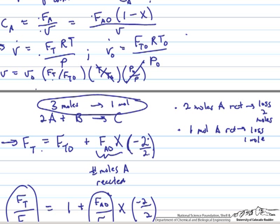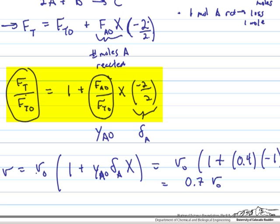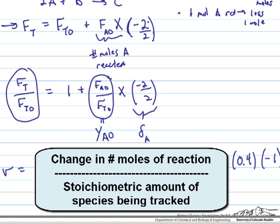So if we now take the step of dividing this expression through by Ft0 because we see that it is going to be useful to have this ratio here, then we can get this expression, that Ft over Ft0 is equal to 1 plus FA0 over Ft0, which is just the mole fraction of A in the feed, yA0, times the conversion x, times this variable that Fogler calls delta A, which is the change in the number of moles in the reaction expression, divided by the stoichiometric coefficient of the component that you are tracking, which for us is A.